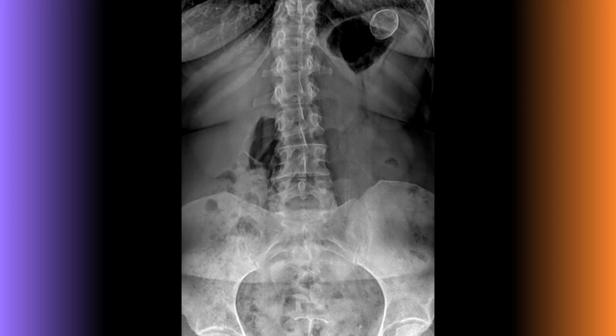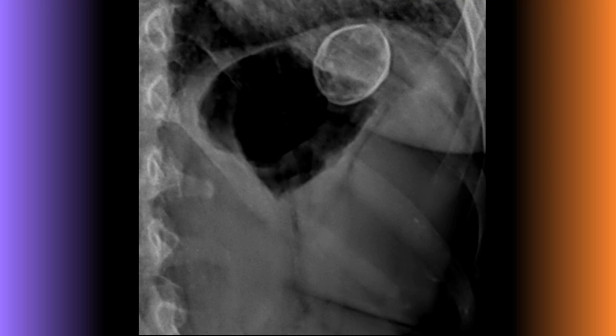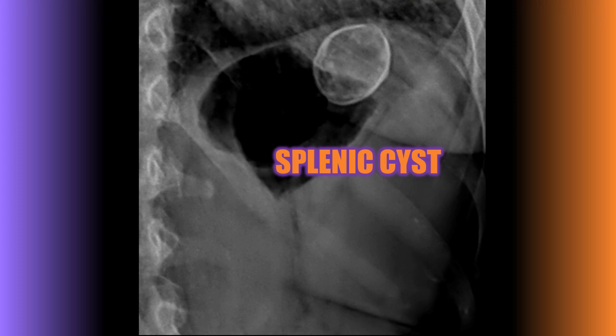On this frontal lumbar radiograph there is a cyst wall calcification in the left upper abdomen adjacent to the gastric air bubble. This is a good example of a calcified splenic cyst. Approximately 80% of all splenic cysts are secondary cysts, often post-traumatic in etiology, and typically ultrasonography or CT are the appropriate follow-up imaging.